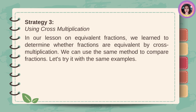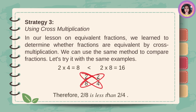Strategy number 3: using cross-multiplication. In our lesson on equivalent fractions, we learned to determine whether fractions are equivalent by cross-multiplication. We can use the same method to compare fractions. Let's try it with the same examples: 2 eighths and 2 fourths. Multiply 2 and 4 — 2 times 2 is equal to 4, and 2 times 8 is equal to 16. Wait — cross-multiplying: 2 times 4 equals 8, and 2 times 8 equals 16. Eight is less than sixteen. Therefore, two-eighths is less than two-fourths.